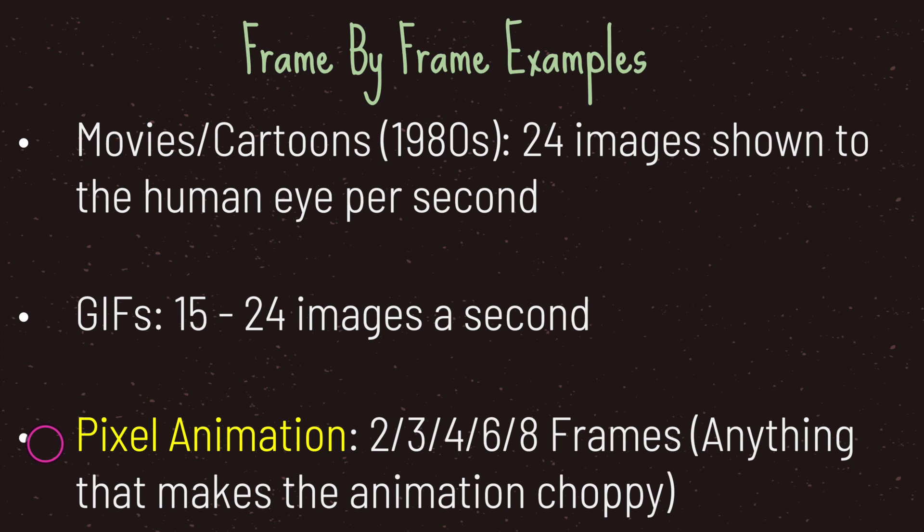So you have two frames, three frames, four frames, six frames, eight frames — really any amount of frames that gives the illusion of movement, but choppy movement. Let me show you an example of frame by frame animation. I'm going to draw six circles to give the illusion of moving from left to right.